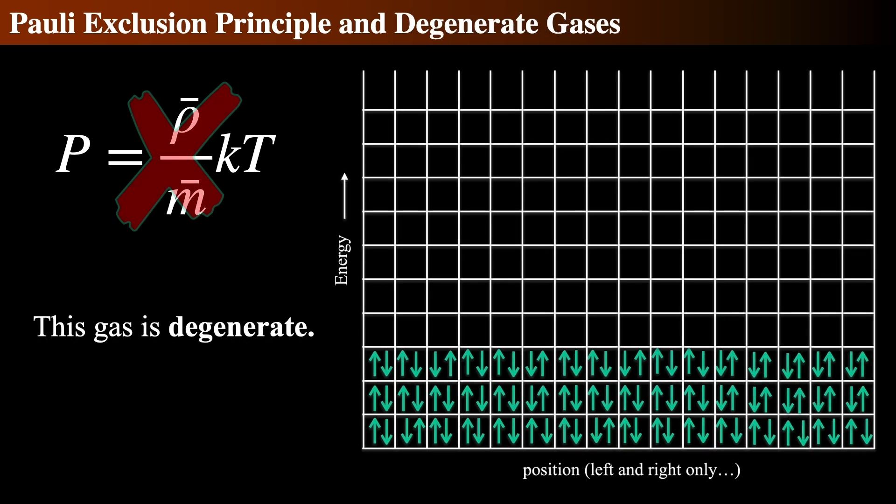So what happens when you take the energy away from a gas? It gets colder and more compressed. Here we see a very, very, very cold fermion gas.